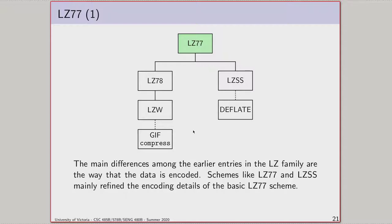The ideas of back references and sliding windows are common to the whole family, even in LZMA, which uses a huge sliding window and other clever techniques. The differences between family members are really about how back references are represented. The family breaks into two distinct subfamilies: one side uses length-distance pairs (LZ77/LZSS style), and the other uses the abstraction of a dictionary or symbol table (LZ78/LZW style). You'll become very familiar with length-distance pairs on assignment two.